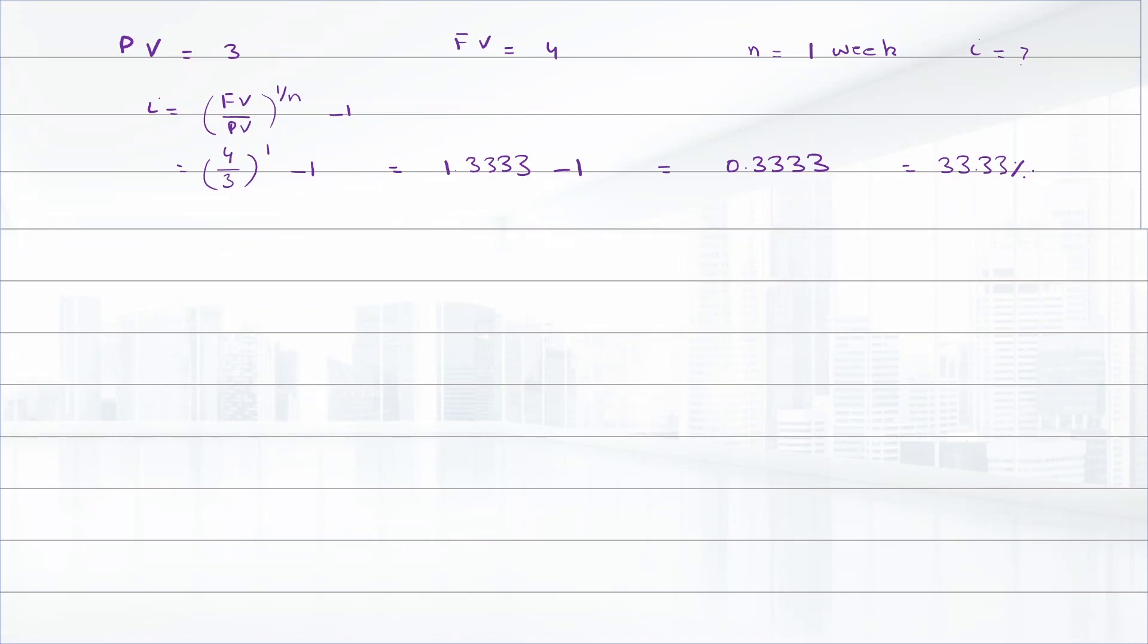And we have to find the APR. To convert this interest rate to APR, we will multiply this interest rate with compounding frequency, that is in this case is 52. So APR is equal to interest rate into 52, that is compounding frequency, 0.3333 multiply by 52, that is equal to 1733.33 percent. So this will be the APR.